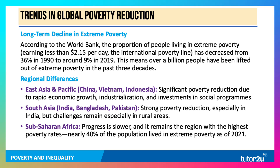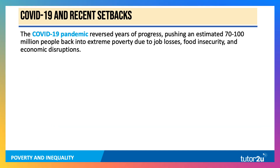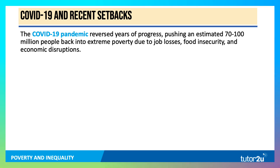Progress is slower in sub-Saharan Africa, and it remains the region in the world with the highest extreme poverty. As of 2021, nearly 40% of the population lived on less than $2.15 a day. COVID-19 and the pandemic, both during and after, have really made a dent in progress in extreme poverty reduction.